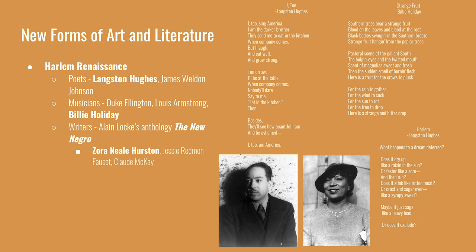For musicians, Duke Ellington and Louis Armstrong were famous jazz band leaders who played in Harlem nightclubs. Billie Holiday was a late addition to the Harlem Renaissance, moving to Harlem in the late 1920s. Her song 'Strange Fruit' was a criticism of lynching in America. Lyrics: Southern trees bear strange fruit. Blood on the leaves and blood on the root. Black body swinging in the southern breeze. Strange fruit hanging from the poplar trees. Pastoral scene of the gallant south. The bulging eyes and the twisted mouth. Scent of magnolia sweet and fresh. Then the sudden smell of burning flesh. Here is a fruit for the crows to pluck, for the rain to gather, for the wind to suck, for the sun to rot, for the tree to drop. Here is a strange and bitter crop.